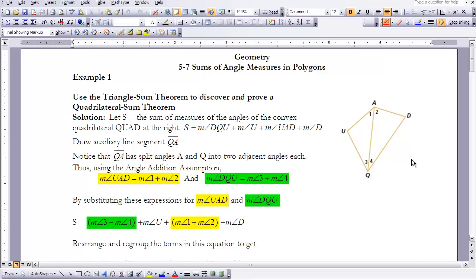We're going to use the angle addition postulate and say that angle UAD is equal to angle 1 plus angle 2, just like you see here pictured. And we're going to say that angle DQU is equal to the measure of angle 3 and angle 4. By substituting these expressions for the measure of angle UAD and the measure of angle DQU, we can say the measure of angle 3 plus 4 plus U plus 1 plus 2 plus D equals the sum now.